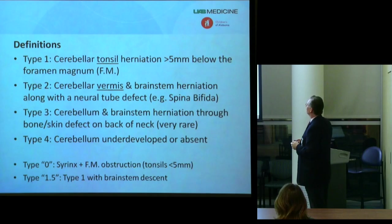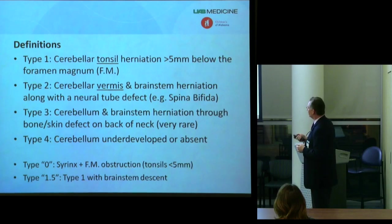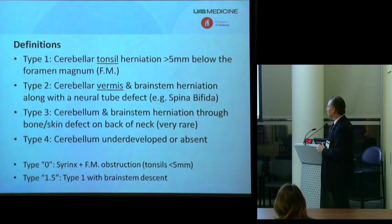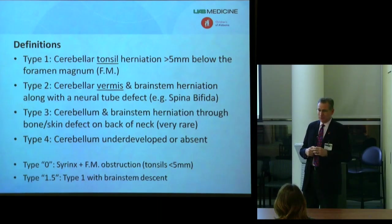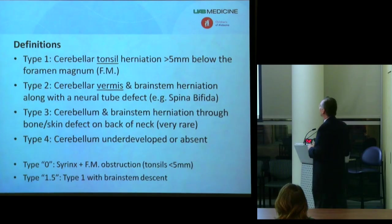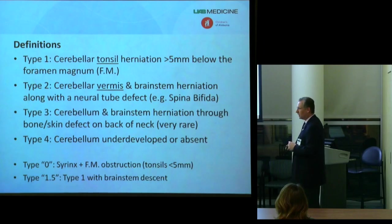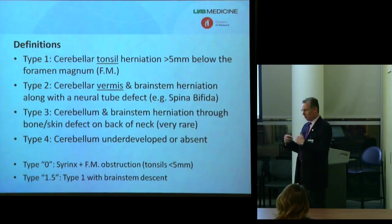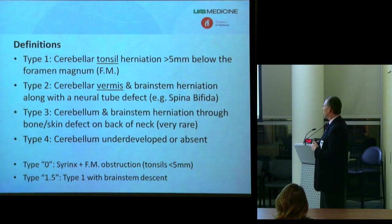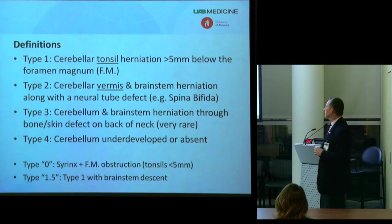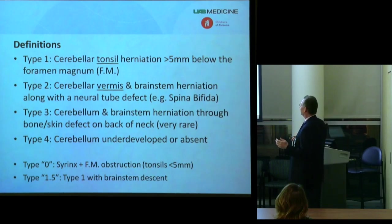Other types of Chiari malformations are less common. A type 2 Chiari malformation is associated with spina bifida — babies born with an open defect most commonly on the low back. In a type 2, it's not the tonsils of the cerebellum but the vermis, a different portion in the midline, that descends below the foramen magnum. In addition, at least a portion of the medulla — sometimes most or all — is actually below the base of the skull.